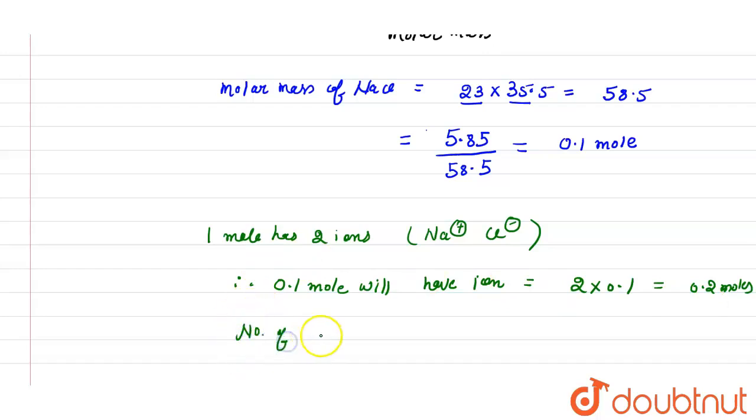We will multiply with Avogadro's number, which is 6.02 into 10 to the power 23. And after calculating it, what we get is 1.2042 into 10 to the power 23 ions.